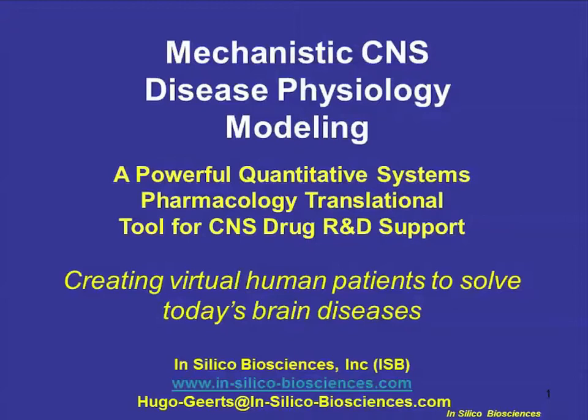In his spare time, Hugo participates in Olympic luge events because he simply loves the thrill of sledding at 100 miles per hour. In today's webinar, Dr. Hugo Geerts will discuss mechanistic disease modeling, which is based on physical, chemical, and physiologic data from preclinical models. This approach is also called quantitative systems pharmacology, or QSP. I now turn it over to Hugo.